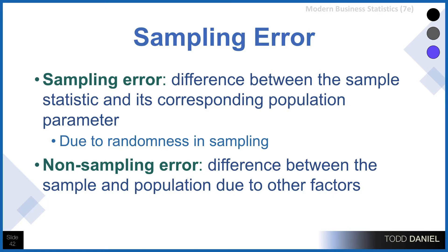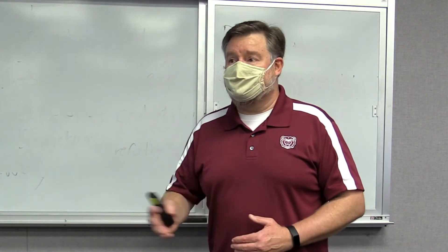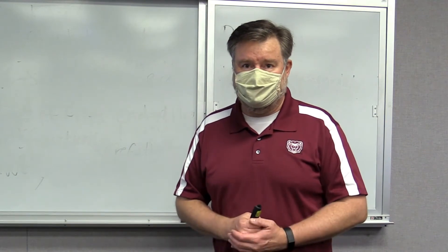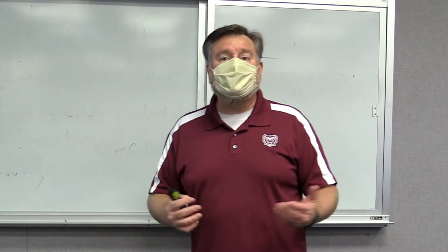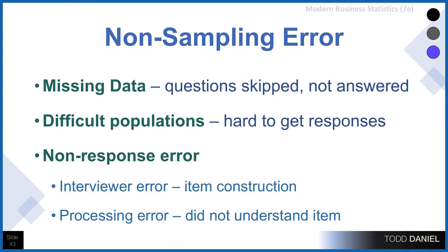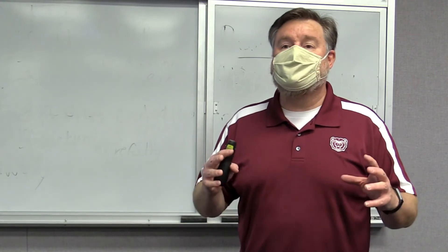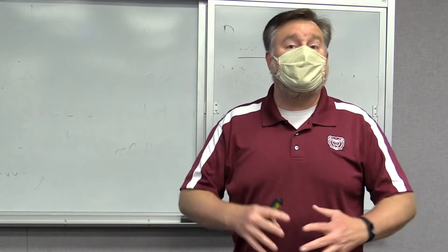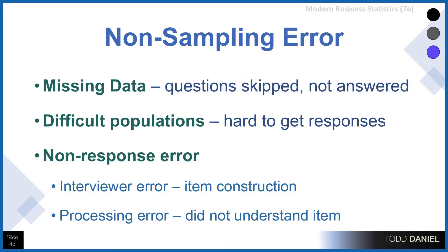Non-sampling error is the difference between the sample and the population that are due to other factors that can be problematic for making estimates from our sample to our population. Things like missing data — when questions are skipped or not answered, that gives us blanks in our data set, which can lead to incorrect conclusions from that sample.